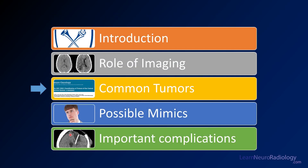In our first lecture, we talked about an introduction to brain tumor imaging, particularly in an emergent situation and the role of each of the imaging tactics. In this lecture, we're going to talk about the common tumors you might see, with an emphasis on the primary gliomas, so you know a little bit about them when you may run into them.